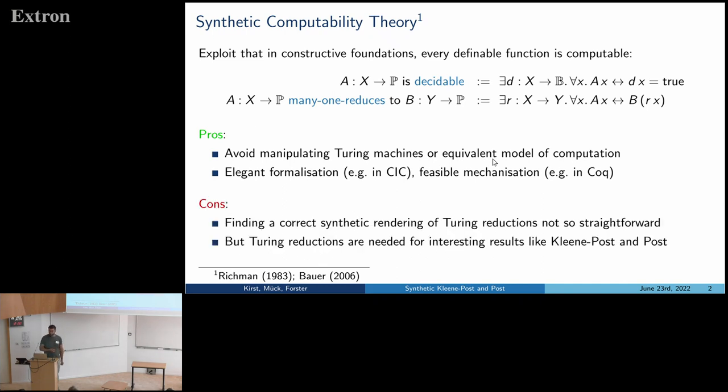Now to the downside, and this was already mentioned in Yannick's talk. This works all good if it's about notions that are based on functions, but as soon as you look at something like Turing reducibility, which is based on the notion of oracles, there's not a direct recipe how to do these things. And unfortunately, Turing reducibility is a very basic and interesting concept in computability theory, and underlying these interesting properties like Kleene-Post and Post theorem, and so we were interested in figuring out how this works.